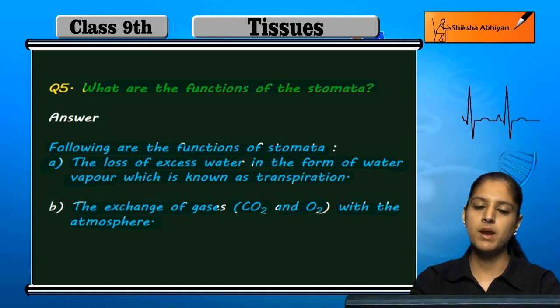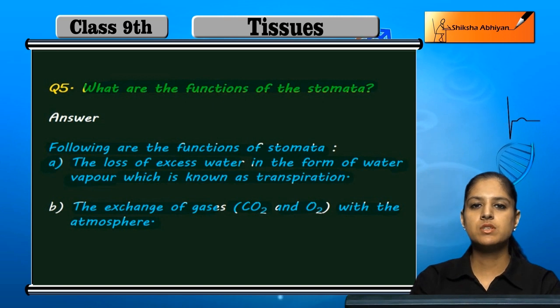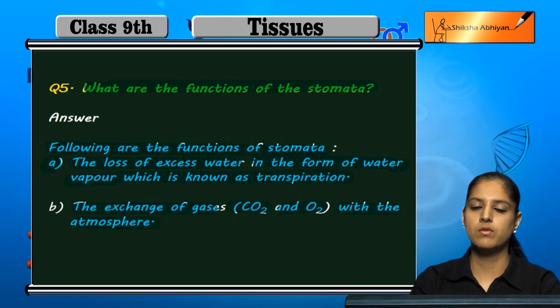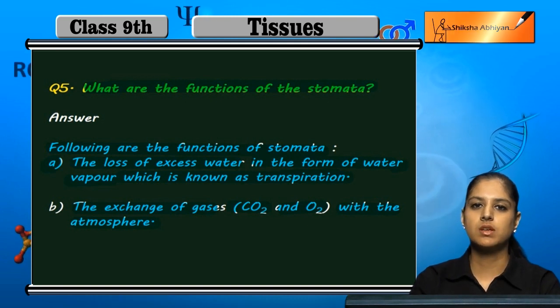So, one function is expelling excess water from the plant body in the form of water vapors by the process called transpiration, and the other is the exchange of carbon dioxide and oxygen, which stomata carry out.